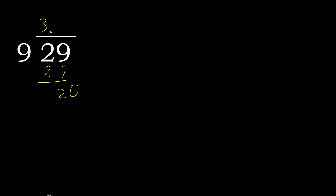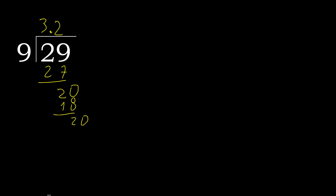9 multiplied by 3 is greater. Multiplied by 2 is 18. Subtract — complete. The point is here, 20. 9 multiplied by 2 is 18. Subtract — complete.